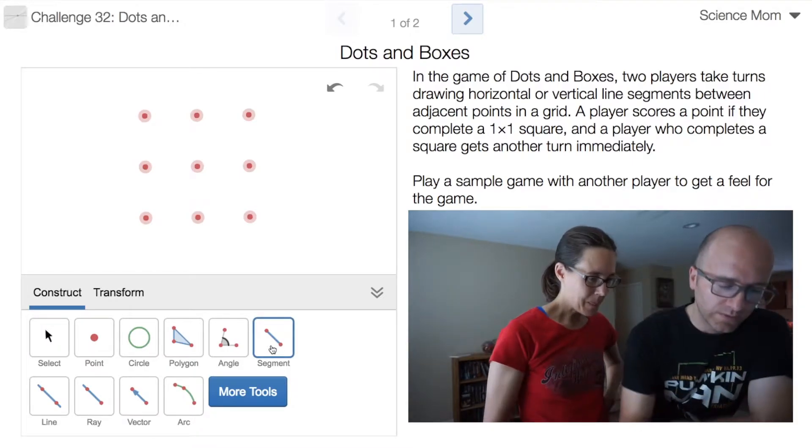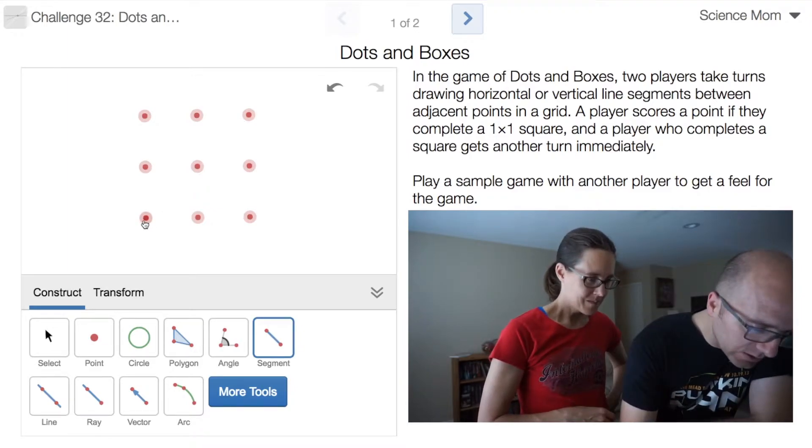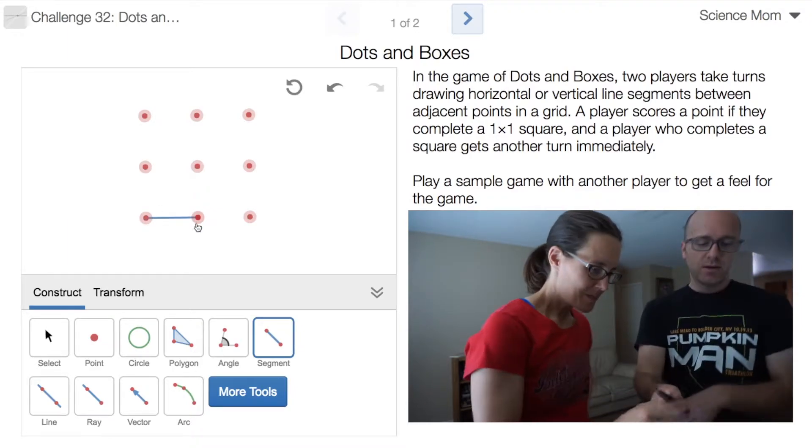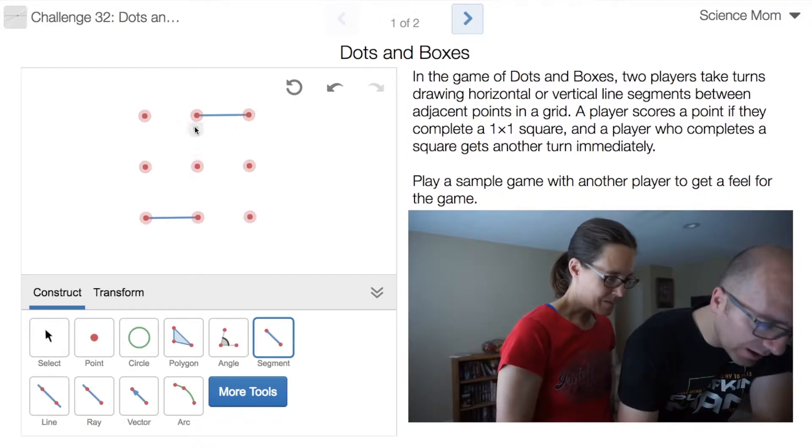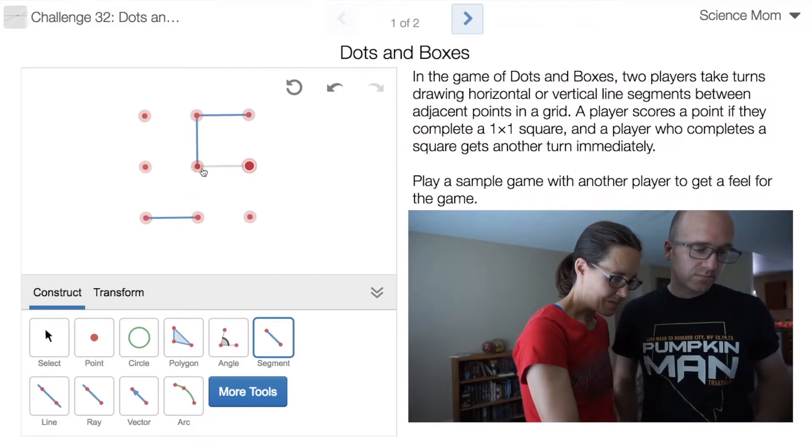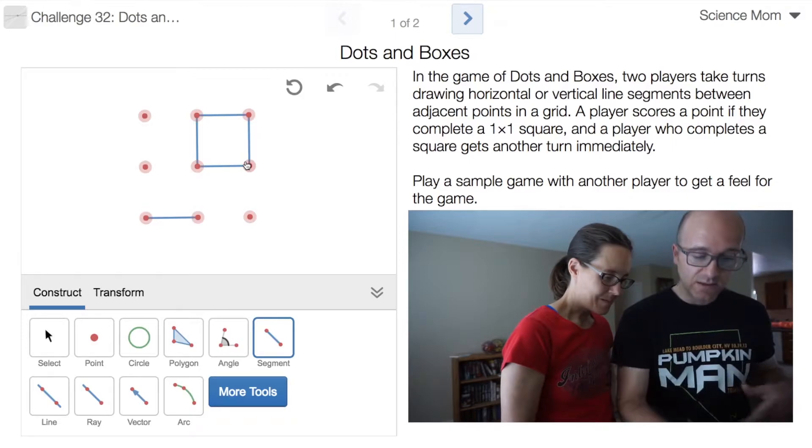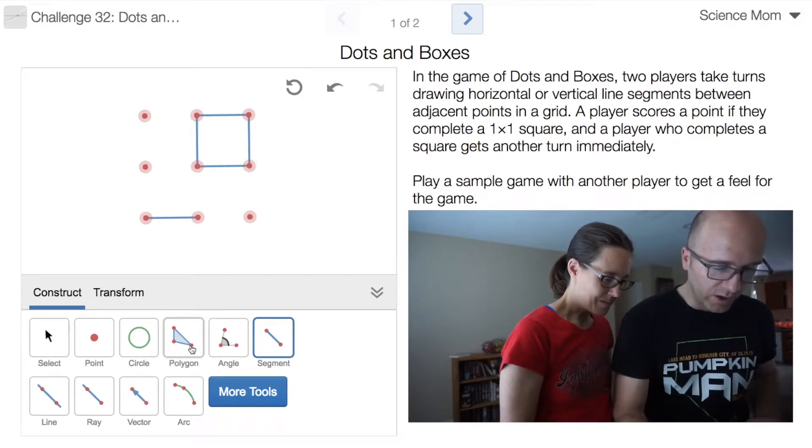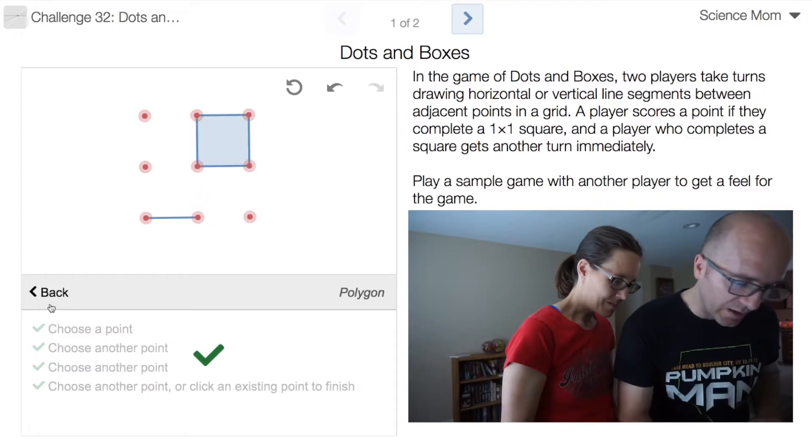Alright, so I'm selecting the segment tool. So players alternate, take turns drawing lines either vertically or horizontally here. And we are trying to make boxes. So right here, I've completed a box. That would be one point for me. I'm even going to color it blue just to remember that that was my point.